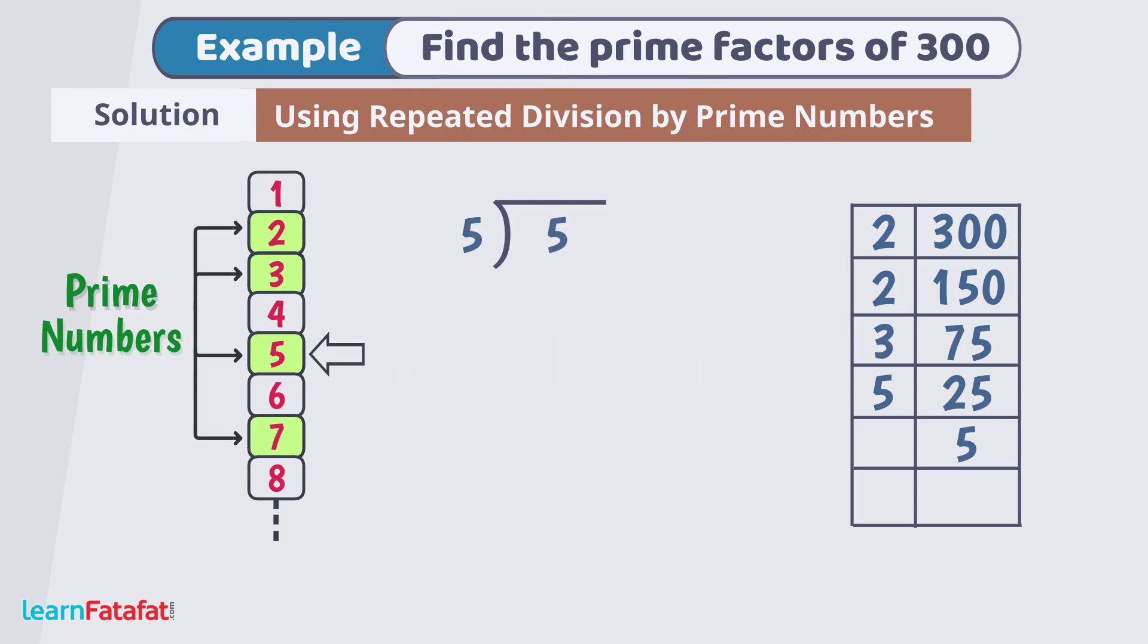Again, 5 is divided by 5 leaves no remainder and quotient is 1. Write 5 here and 1 here. As we got 1, so we will stop here.